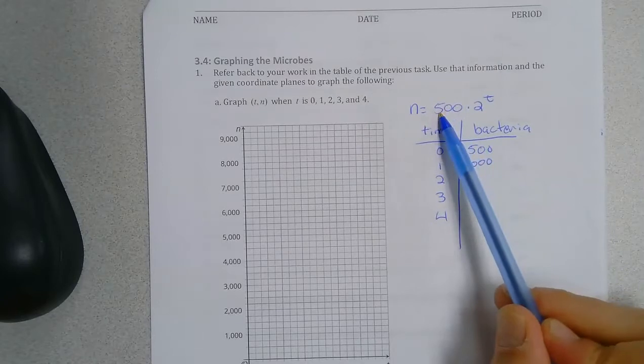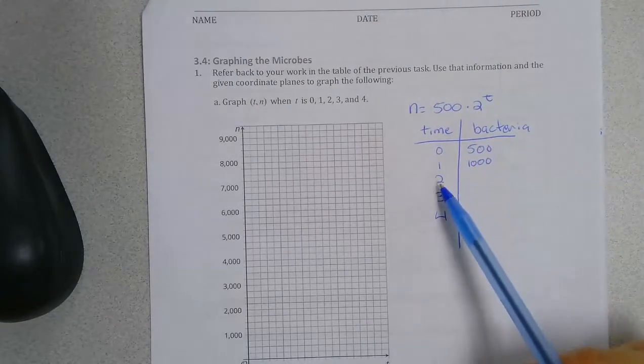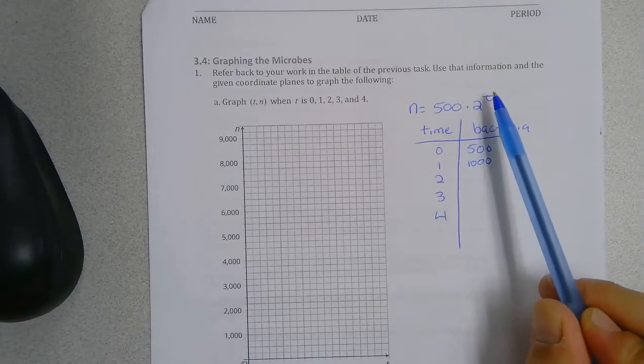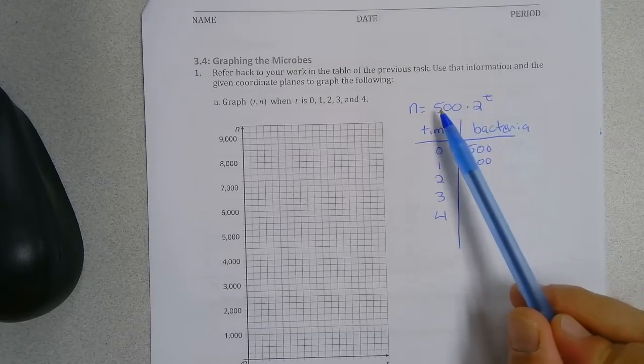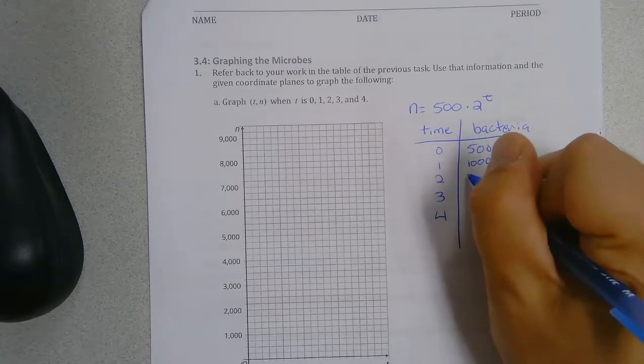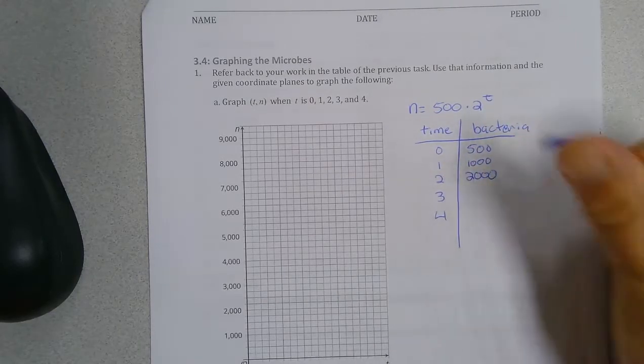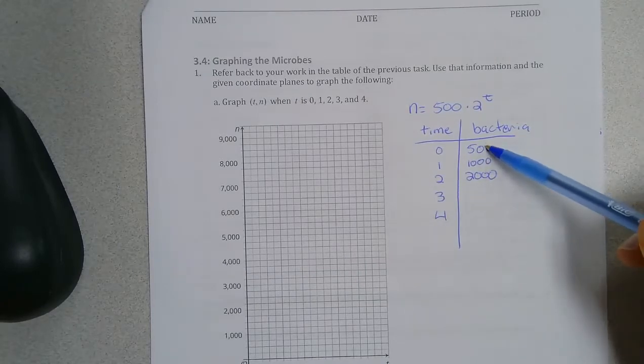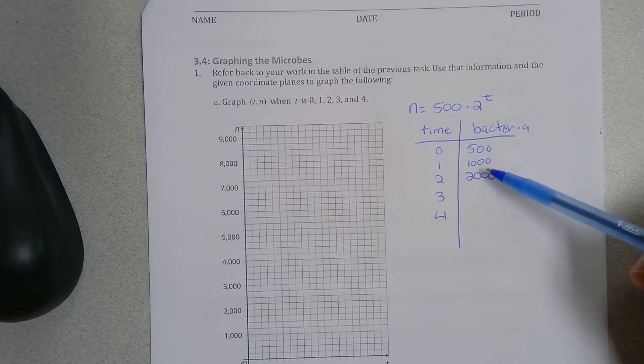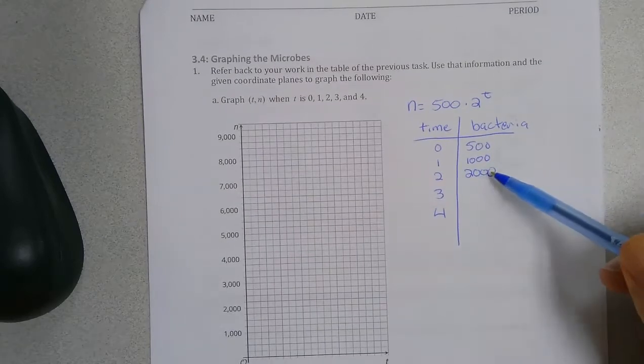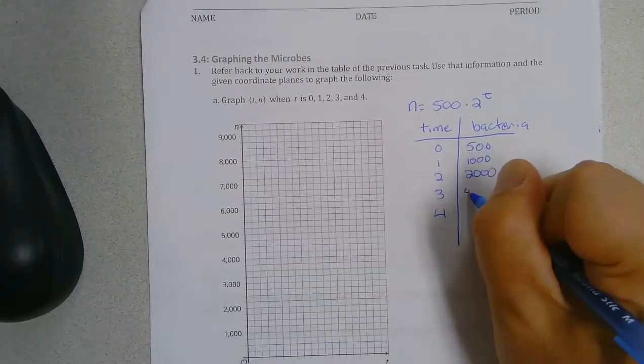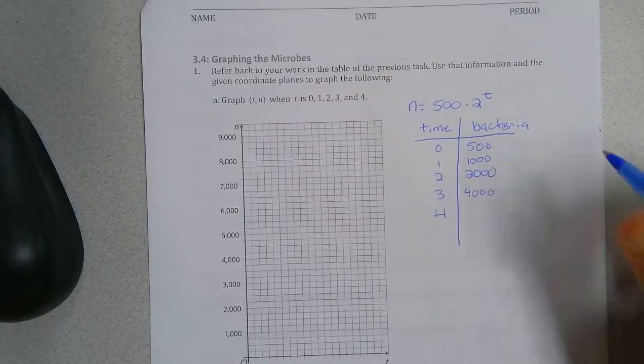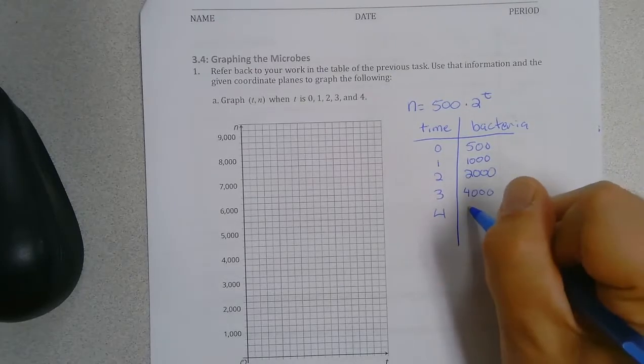And then remember, we can go 500 times 2 squared. So 500 times 4 is 2,000. But really, we're just doubling as we go down the table. So 500 times 2 is 1,000. 1,000 times 2 is 2,000. 2,000 times 2 is 4,000. And 4,000 times 2 is going to make 8,000.